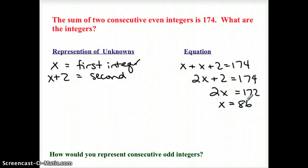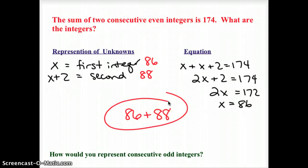And remember, I'm not done. That 86, that's just my first integer, 88 should be my next integer. And so together it could be 86 plus 88. That really does equal 174, so that's good. These are my two integers.